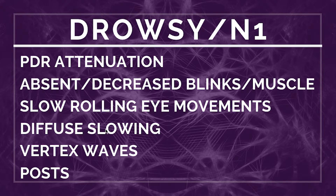Fourth on the list is diffuse slowing, mostly in the theta range, which is normal as you're getting drowsy. It's important to know what stage the patient is at when reading an EEG, because diffuse slowing is abnormal if the patient is awake, but if they're drowsy it's not necessarily abnormal — in fact, it's typically normal.